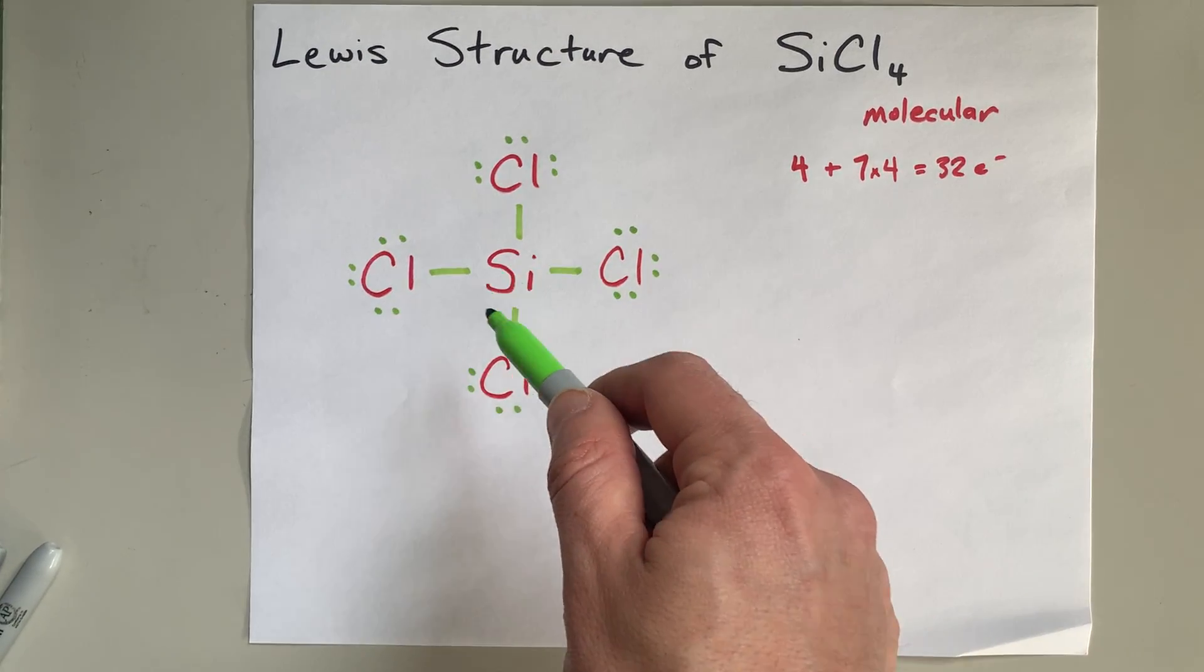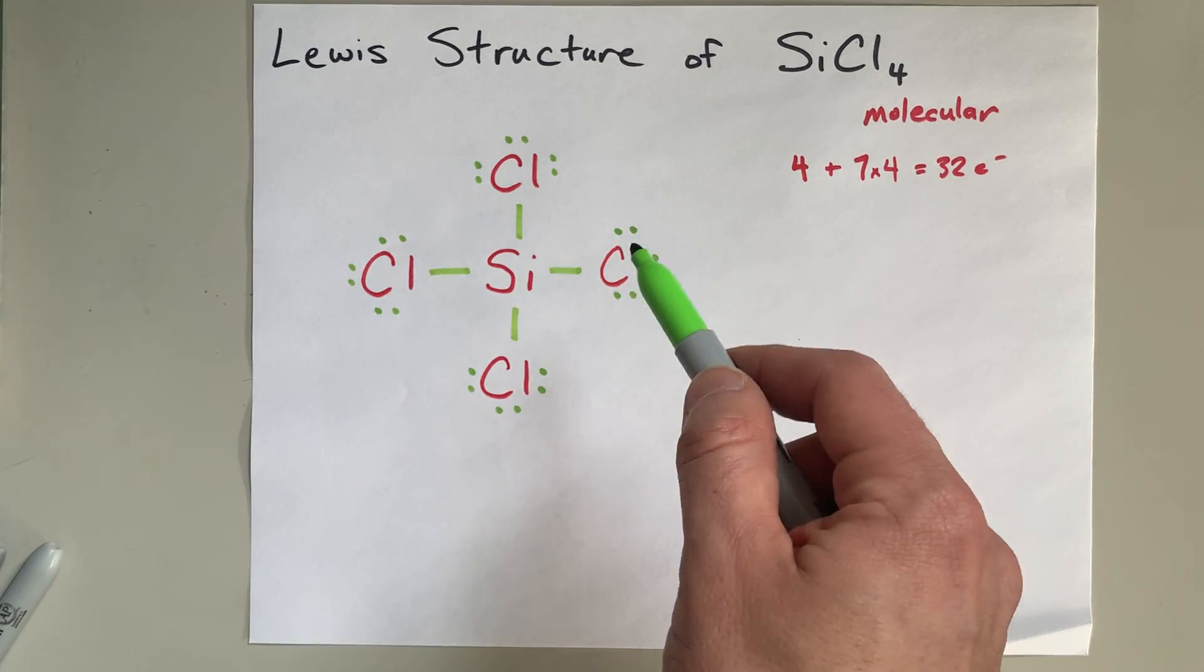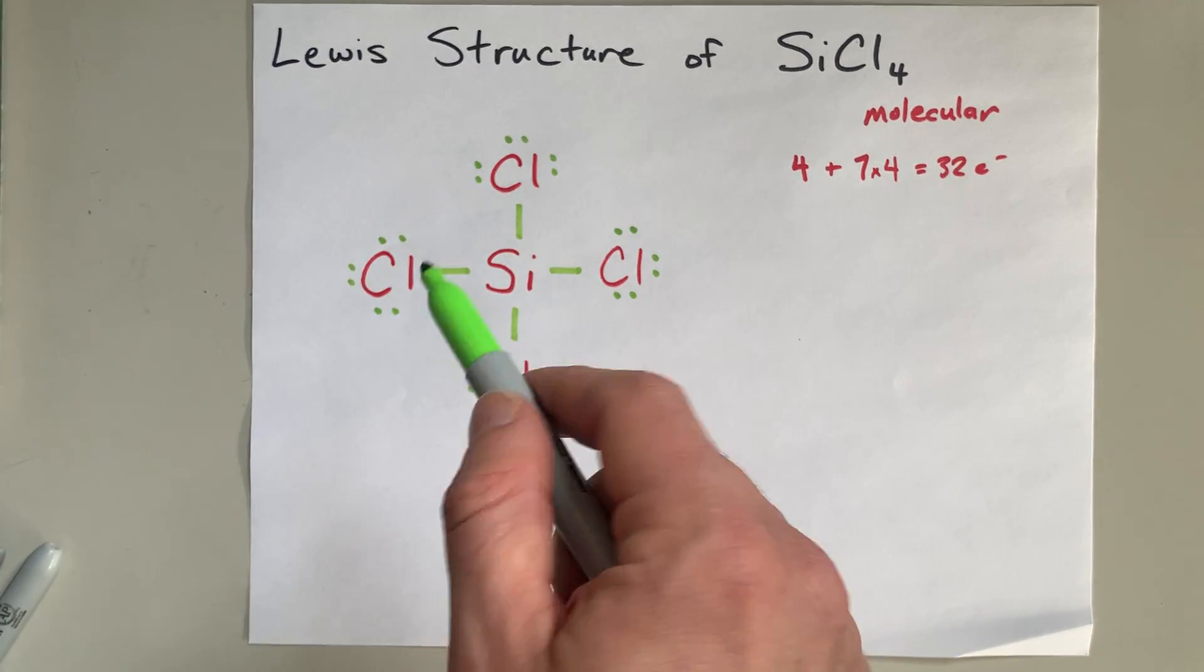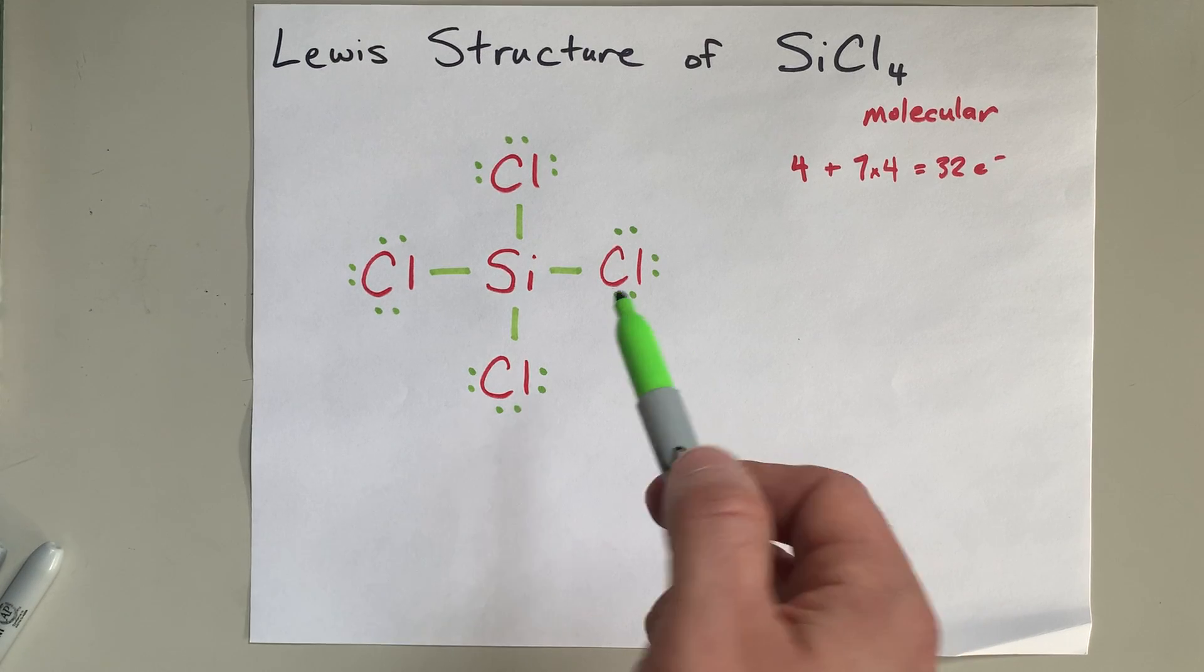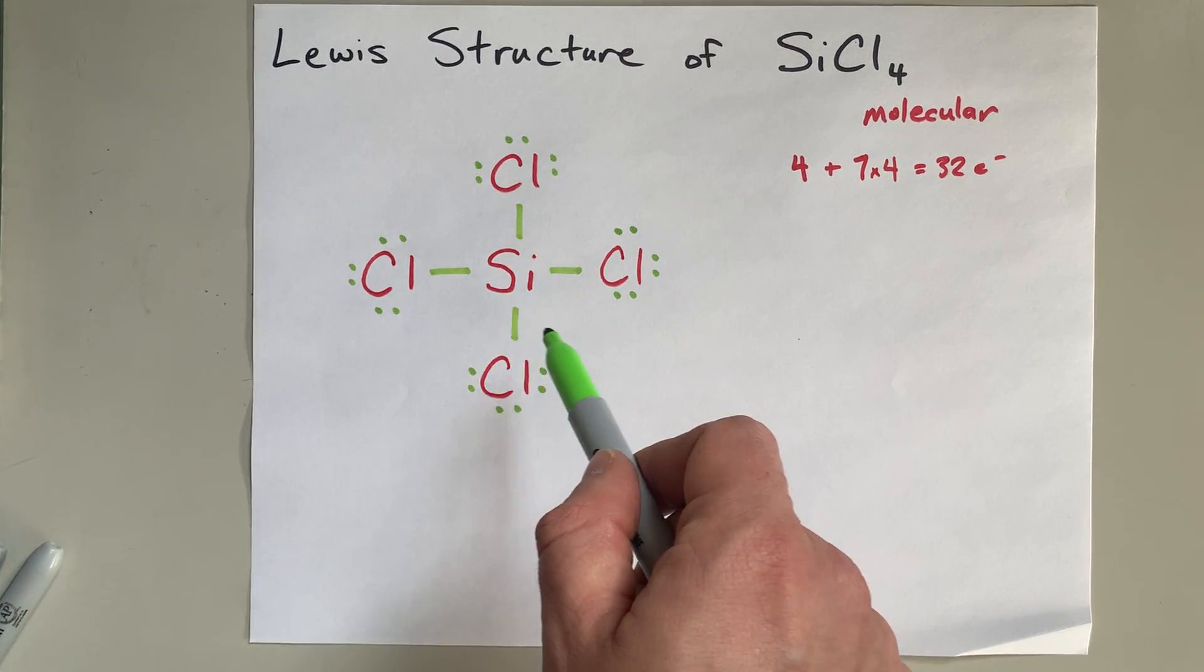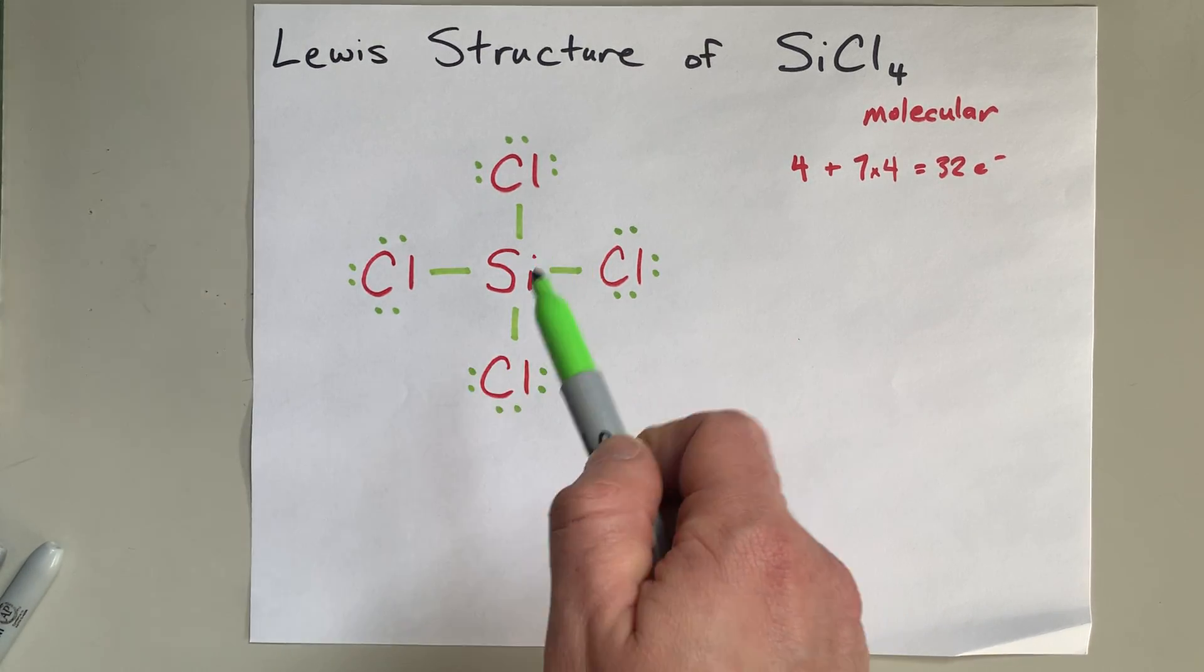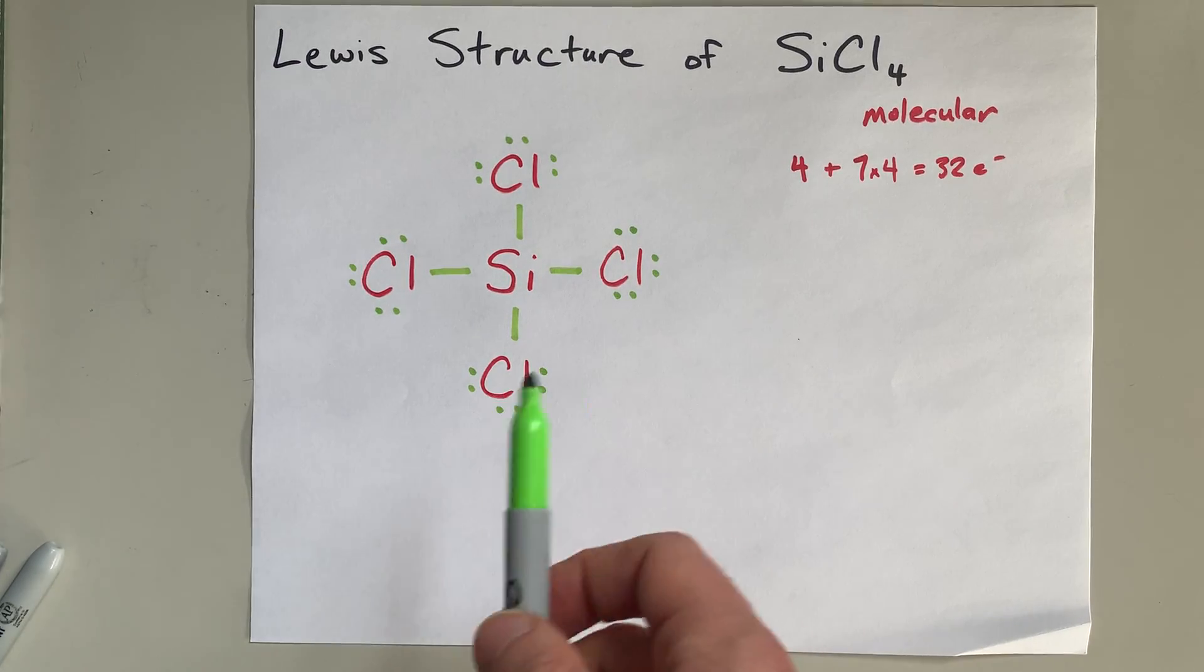And if I didn't have a complete octet on that central atom, I might move electrons in to form double, triple bonds. But again, this silicon already has eight electrons around it, so its octet rule is satisfied as well.